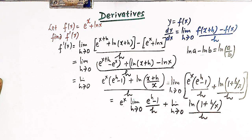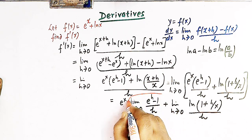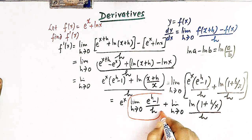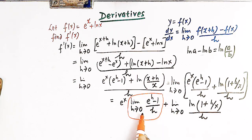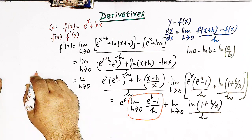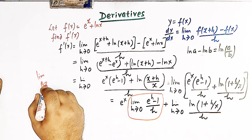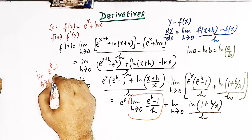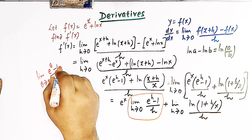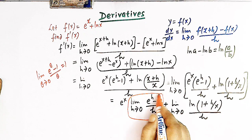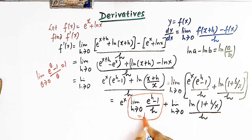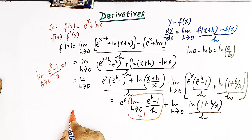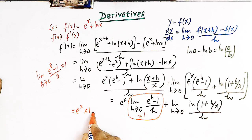This first limit is a direct result from limits. We know that limit theta tends to 0 of e raised to theta minus 1 over theta is equal to 1. So the value of this first limit is equal to 1, giving us e raised to x times 1, that is e raised to x.